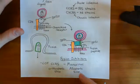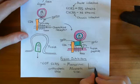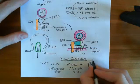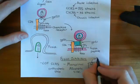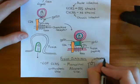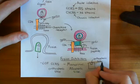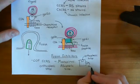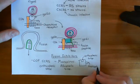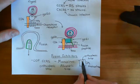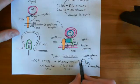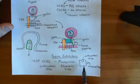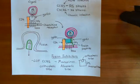Maraviroc binds at what's called an allosteric site — a site other than the orthosteric site. By binding to this allosteric site, it may induce a conformational change in the orthosteric site so that it can no longer bind to GP120. So Maraviroc is an allosteric inhibitor of CCR5 rather than a competitive antagonist.